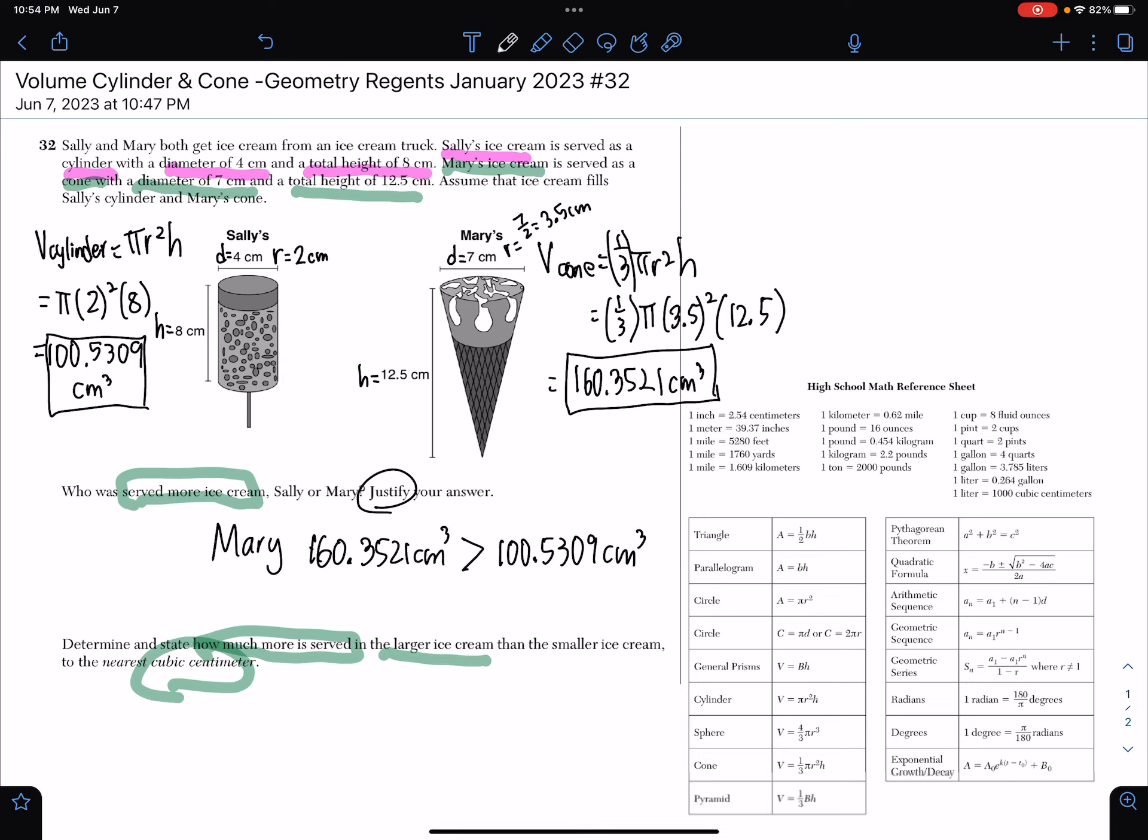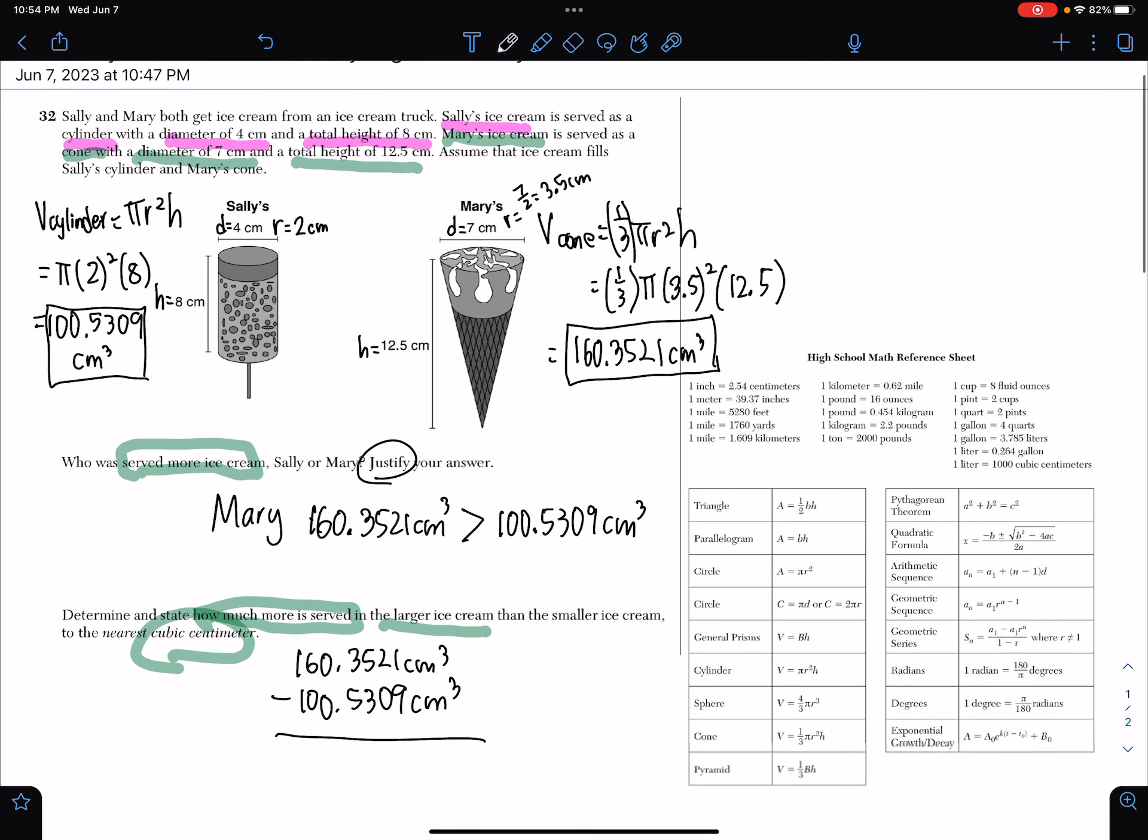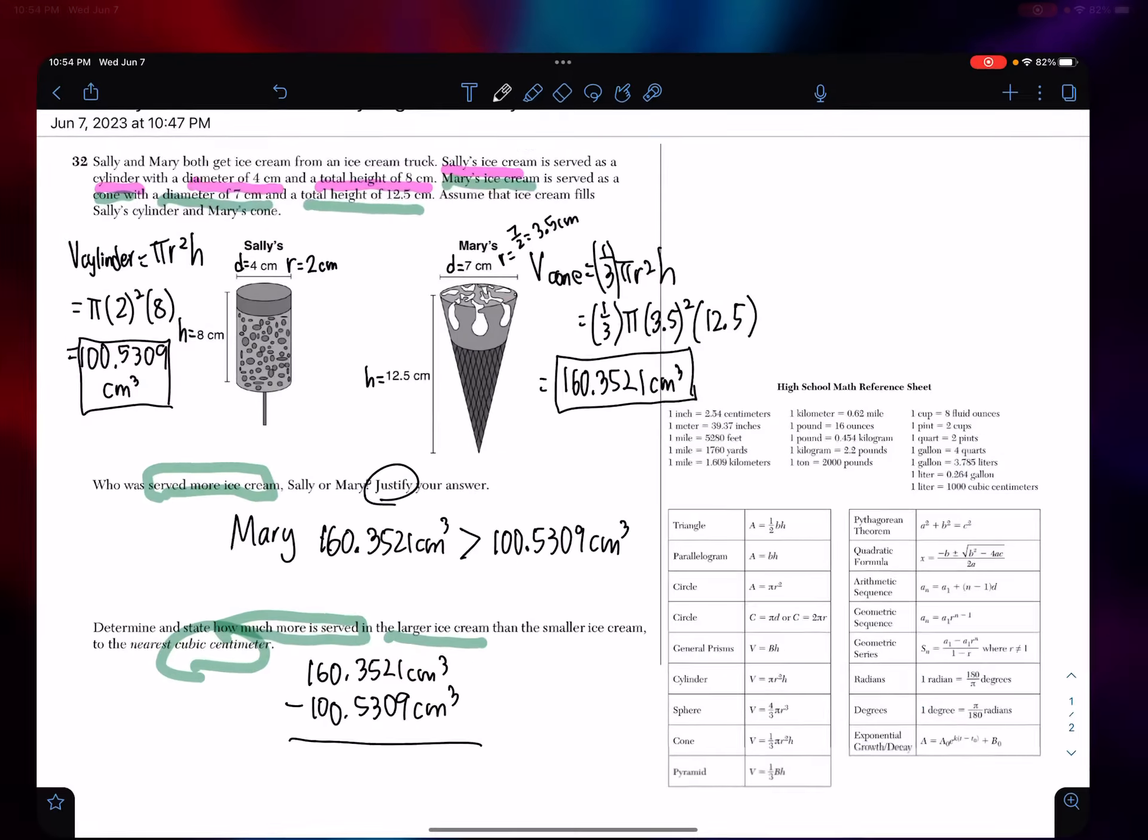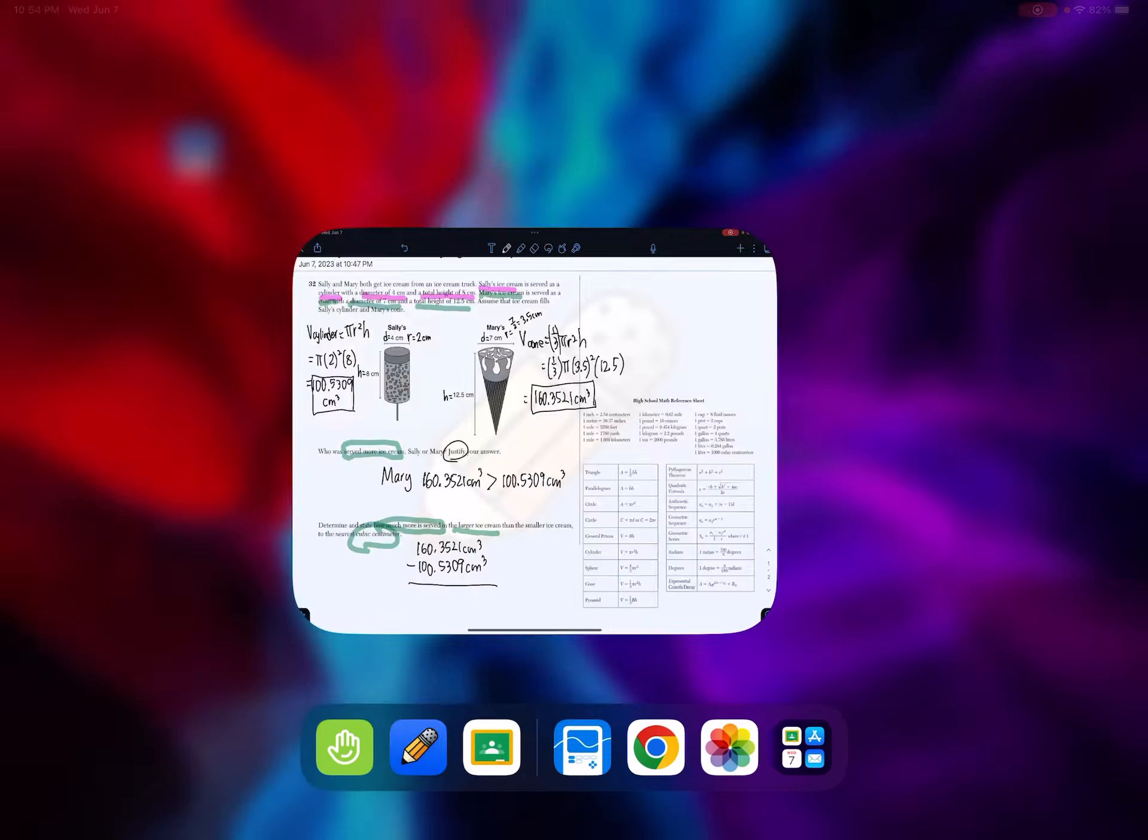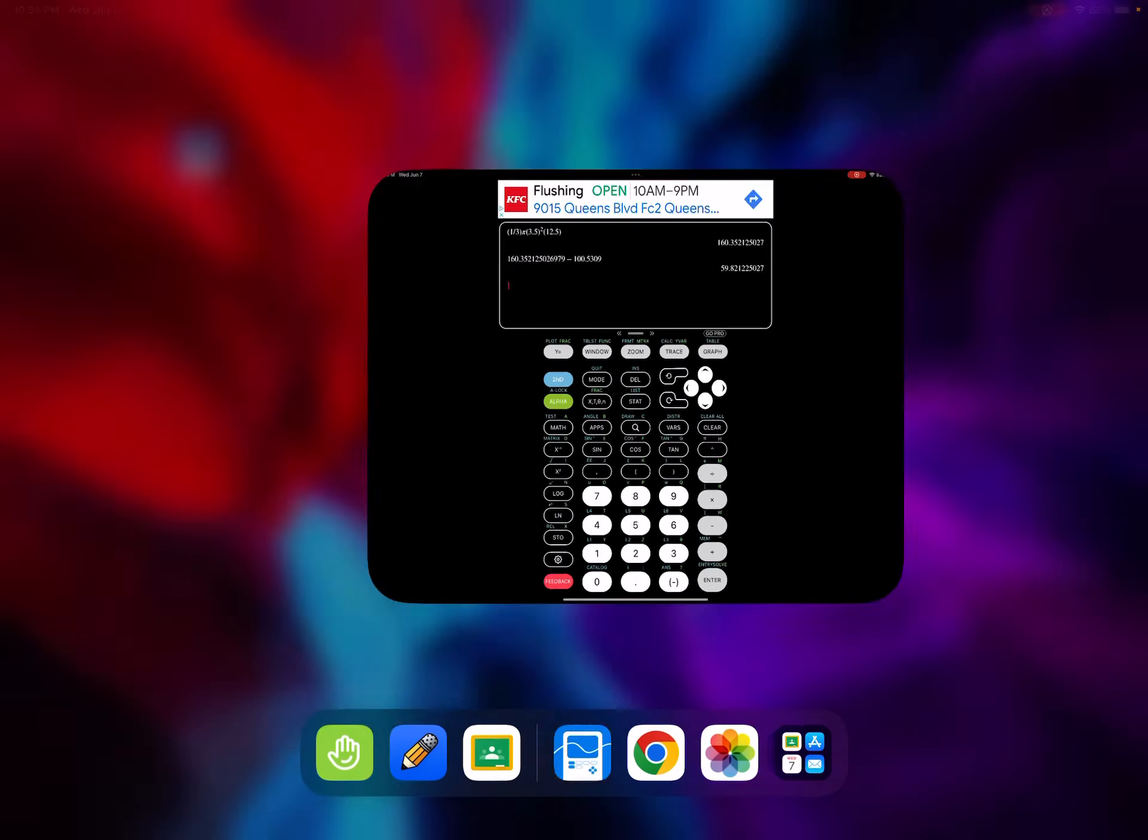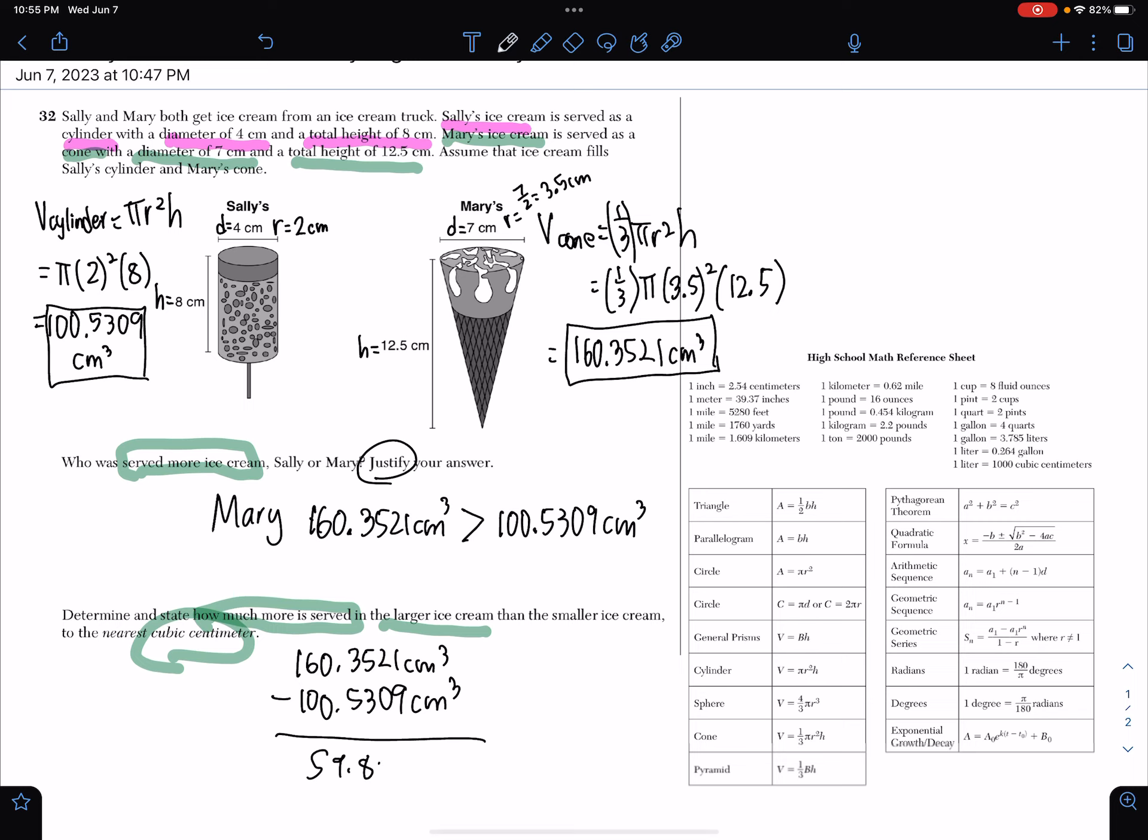Here it says determine how much more it serves. If you want to figure how much more you would have to subtract. We subtract the higher number minus the smaller number. When I put this in the calculator, we get 59.8212. When the question says to round to the nearest cubic centimeter, this would be 60 cubic centimeters and we're done.